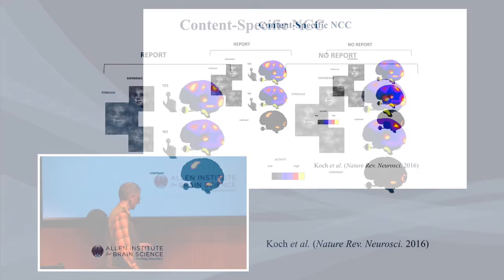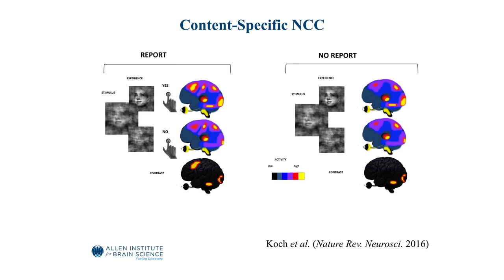In a more modern version, schematized here from a review article, you always have the same physical stimulus — in this case a very noisy image that sometimes, due to fluctuation in your brain, particularly if it's flashed briefly, you'll see as a face. You push a button: 'yes, I saw a face,' and various parts of the brain are active, as shown in a schematized fMRI BOLD experiment. For the same physical input, sometimes you don't see a face, you push the no button. You do a contrast between the two fMRI BOLD signatures and you see a set of areas: a fusiform face area, extrastriate cortex, and something in the front of the brain. Of course, there are many possible confounds here that you have to dissociate.